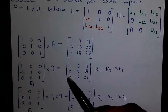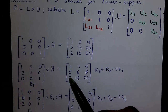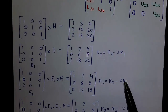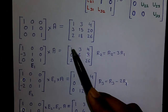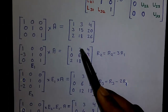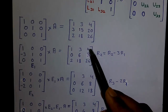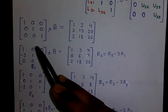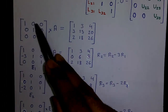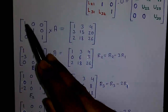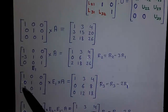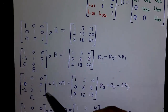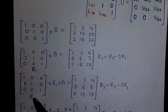Next, to get a 0 at the second sub-diagonal position, we apply R3 = R3 − 2R1: 2−2×1=0, 18−2×3=12, 26−2×4=18. We apply the same operation to the identity matrix — but with respect to the original identity, not the previous result: 0−2×1=−2, 0−2×0=0, 1−2×0=1. This gives us elementary matrix E2.